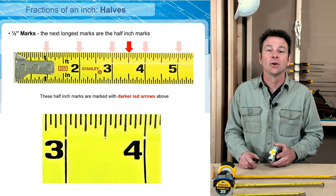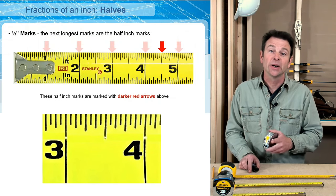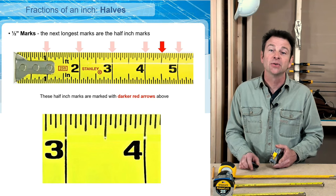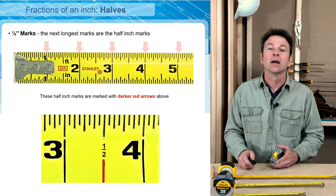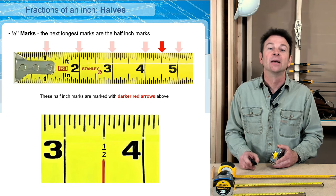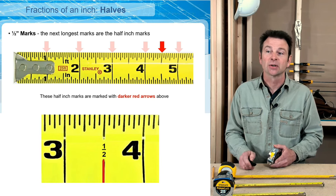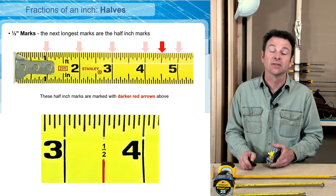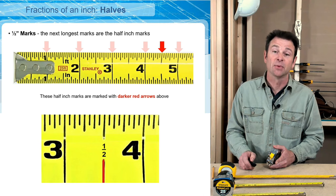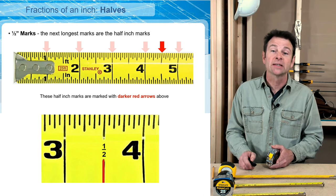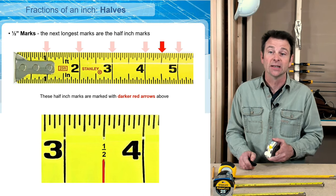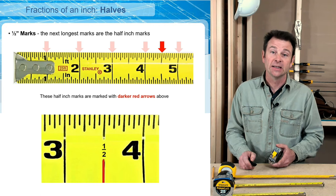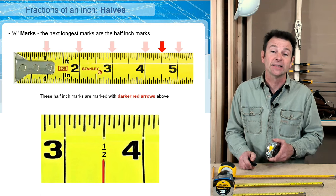Fractions are going to fall in between all of the inch marks. Our half inch marks are right in between — right in the middle of any two inch marks — and that is an easy place to focus to find those half inch marks. Also, the length of that half inch mark is one of the longest fraction marks in between the inches. These are fairly easy for students to identify and they stand out when you look at the tape.